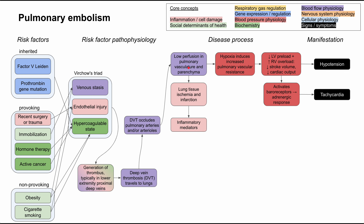The low perfusion in the pulmonary vasculature also contributes to lung tissue ischemia and infarction. Whenever you have ischemia or infarction, inflammatory mediators are released. You'll also get inflammatory mediators from congestion in the pulmonary vascular beds. This congestion can result in pulmonary edema — the static fluid — which also contributes to more inflammatory mediators.